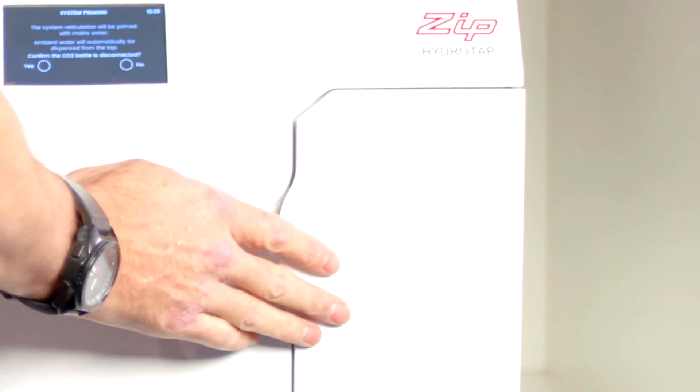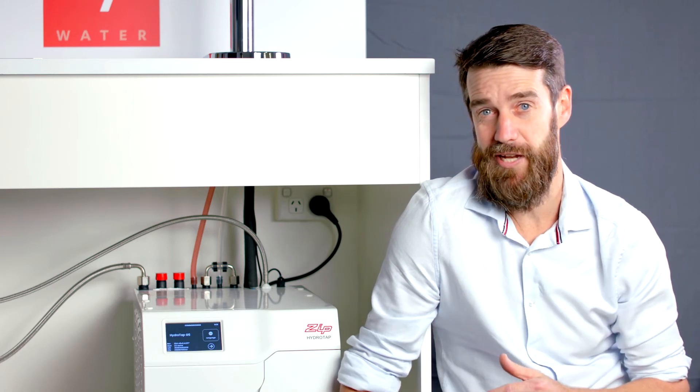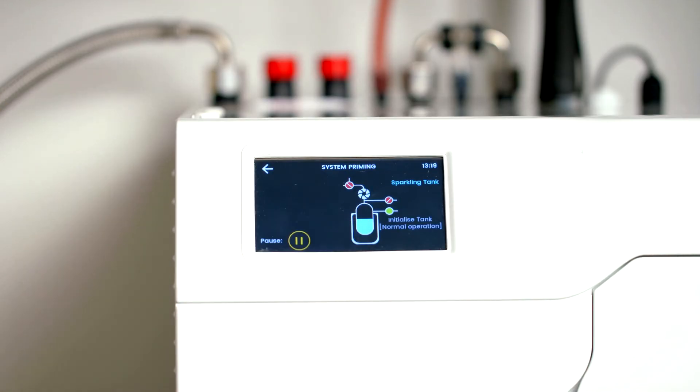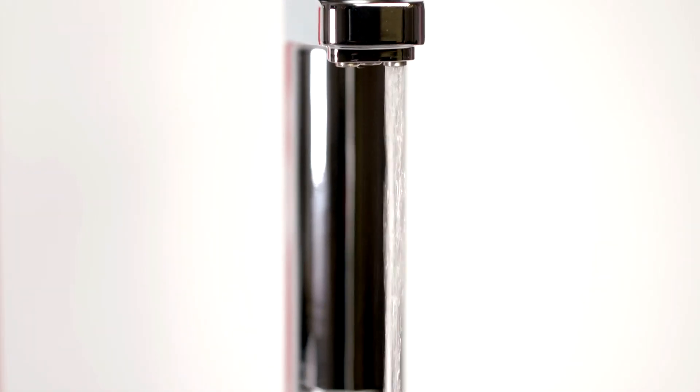Next, we need to prime the HydraTap system. This means that all the water paths inside the HydraTap will have water passed through them for the first time. Press the play button to start the system priming. Water may dispense from the tap or faucet during this process.